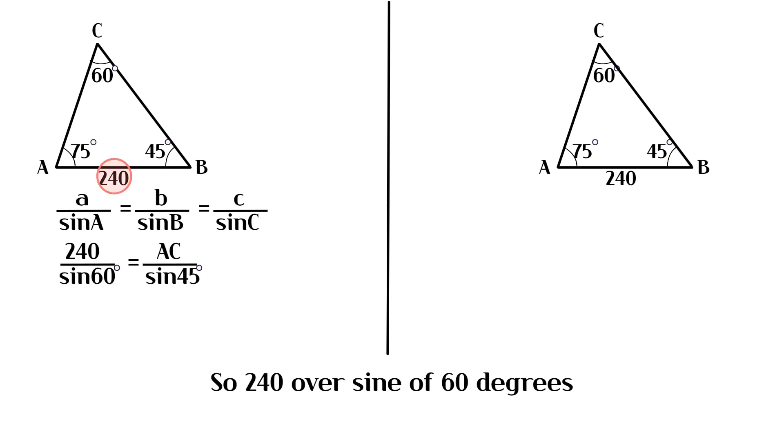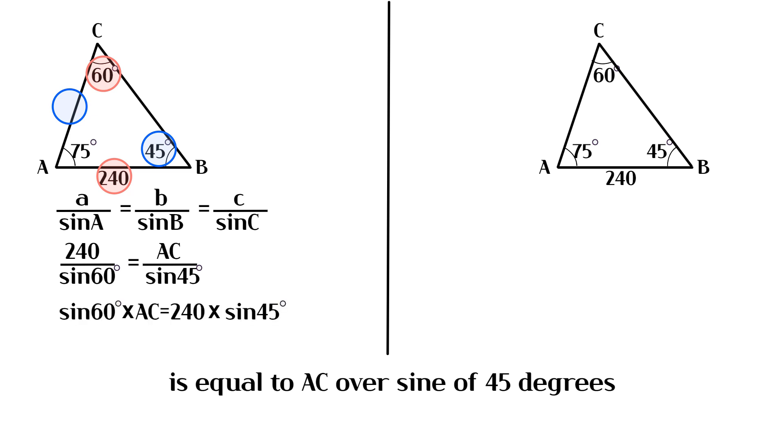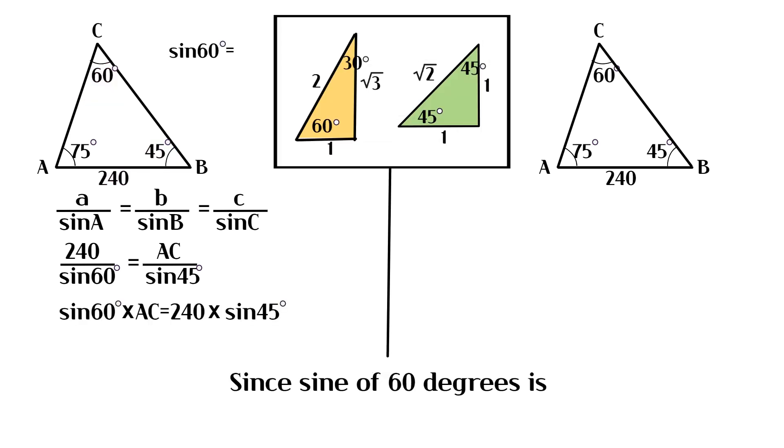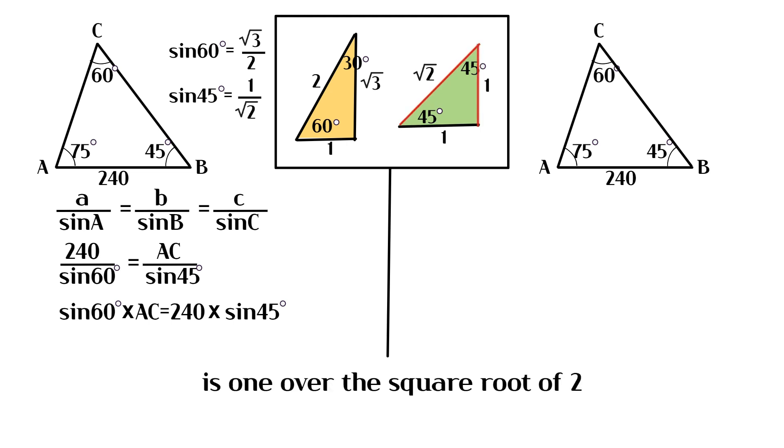So 240 over sine of 60 degrees is equal to AC over sine of 45 degrees. Since sine of 60 degrees is the square root of 3 over 2, and sine of 45 degrees is 1 over the square root of 2.